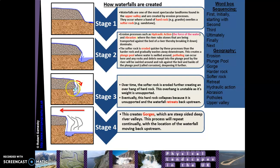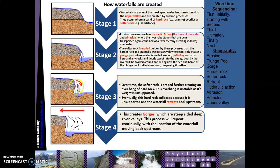Stage three: the undercut continues to get bigger, and because it's growing, the hard rock above it forms an overhang. As the overhang develops, it becomes weakened by the pressure of the water above it and by gravity pulling down on it. Eventually the overhang collapses into the plunge pool, and that material acts like missiles against the soft rock, weakening it further. Over time, the plunge pool continues to deepen and the undercut grows, the overhang forms again, and collapses again.